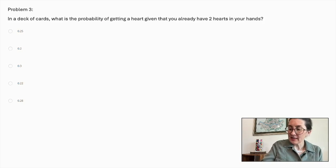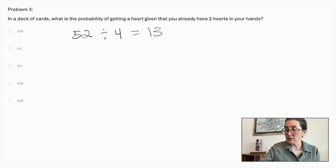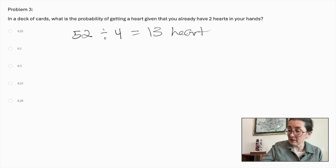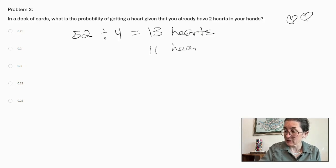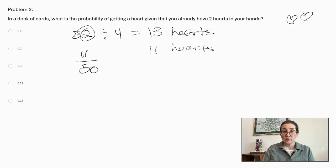A deck of cards has 52 total, and there are 4 suits. Each of them has 13 cards. So there are 13 hearts in a deck of cards. You have 2 of them, so now there are only 11 hearts in this deck of cards. And also, now, because you've got 2 cards, there are only 50 cards.